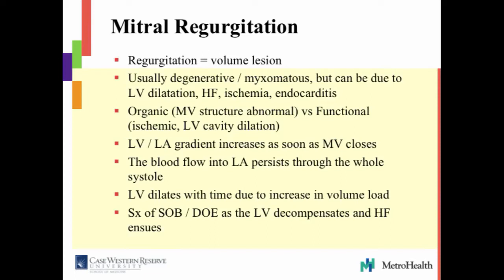It's a volume lesion. Where's the volume coming from and where is it going? The volume comes from when the left ventricle contracts — the normal output should go into the aorta. But here, you have two ways it can go: into the aorta, or into the left atrium because the mitral valve is insufficient and incompetent. Blood goes where the pressure is less. The pressure in the left atrium is 10 versus 120 in the aorta. So obviously the blood goes back into the left atrium — it's much easier. So you have a left ventricular to left atrial gradient in blood flow throughout the cycle because the mitral valve doesn't close, and blood flows into the left atrium throughout the whole systole.